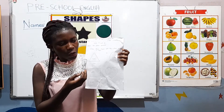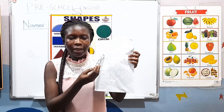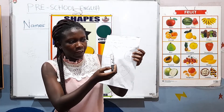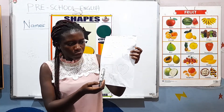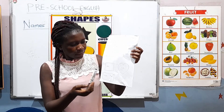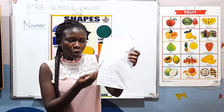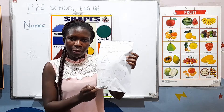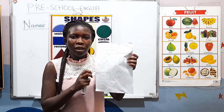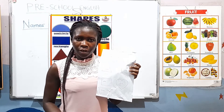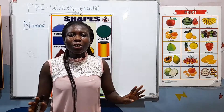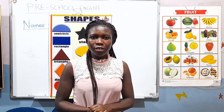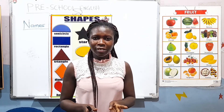For your exercise, you are to color these shapes with the colors written in them. We have a triangle, circle, square, hat, and rectangle. The colors you are going to use are written inside them, so use those colors to color them nicely. This brings us to the end of our lesson for today — see you next time, bye!